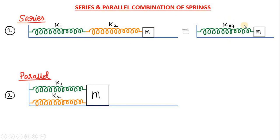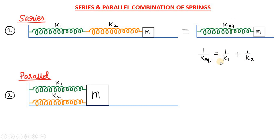So what is the formula to calculate the k equivalent? The formula is very simple. In case of series combination, the formula is 1 divided by k equivalent is equal to 1 divided by k1 plus 1 divided by k2. That means the reciprocal of the equivalent spring constant is equal to the sum of the reciprocals of the spring constants connected in series.